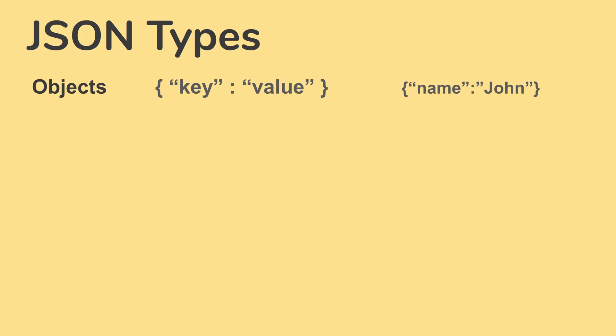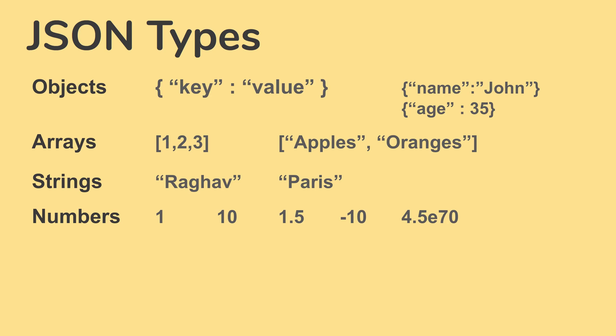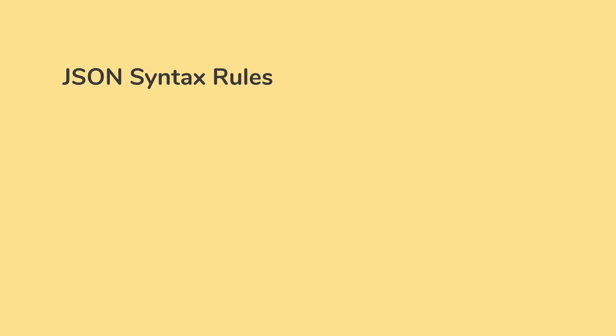We have already seen objects, which are key-value pairs. The key is usually a string within quotes, and the value can be a string in quotes or a number — for example, age: 35, where 35 is not in quotes. We can have arrays — numerical, string, or object arrays. We can have strings, numbers (simple, decimal, negative, or scientific), Boolean types (true and false), or null values in JSON.